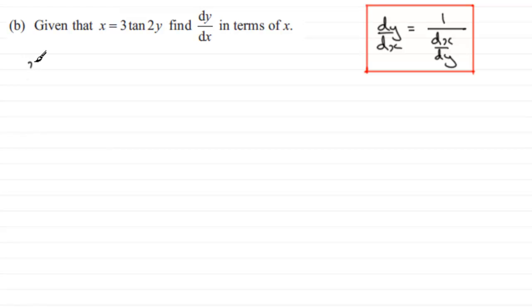So we start with x equaling 3 tan 2y, and therefore to get dx/dy we differentiate 3 tan 2y with respect to y. We're going to have the 3 multiplied by the differential of tan 2y. To differentiate tan 2y we need to use the chain rule. Differentiating this gives us sec squared of 2y, then we multiply this by the differential of 2y which is 2.